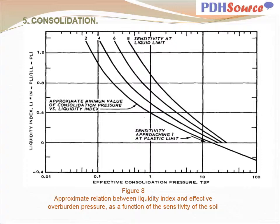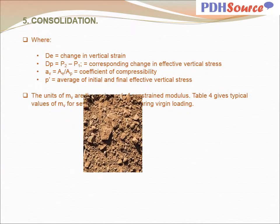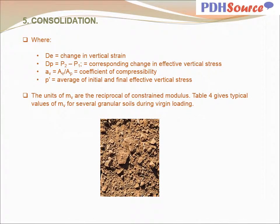The relationship between deformation or strain and stress for one-dimensional compression is expressed by the coefficient of volume compressibility M sub V, defined by equation 6. The units of M sub V are the reciprocal of constrained modulus. Table 4 gives typical values of M sub V for several granular soils during virgin loading.